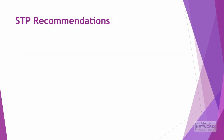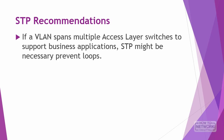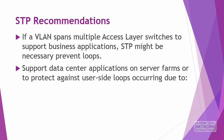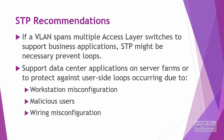Implementing spanning tree is a key issue when considering Layer 2 campus infrastructure best practices. There are several recommendations: a VLAN spanning multiple access layer switches may need spanning tree to prevent loops for business applications. Spanning tree could be implemented to support data center applications on server farms or to protect against user-side loops, which can occur from workstation misconfiguration, malicious users, or wiring misconfiguration. Network designers should take advantage of the Cisco STP toolkit.